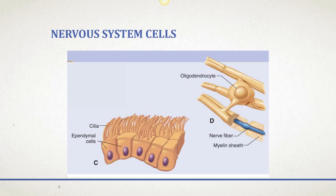The next cell is an ependymal cell. This cell makes and circulates cerebral spinal fluid, abbreviated CSF. You can see these cells have cilia on the top of them, and that helps circulate the cerebral spinal fluid. Cerebral spinal fluid is rich in nutrients, and we're going to learn more about that later in this lecture.